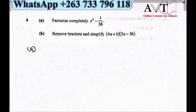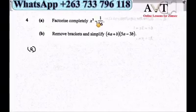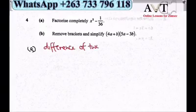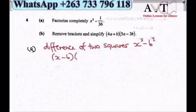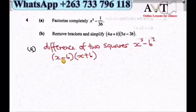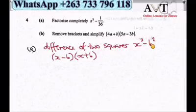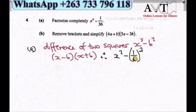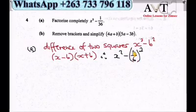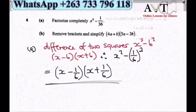Question 4a: Factorise x² minus 1 over 36. This is a difference of two squares: a² − b² = (a − b)(a + b). We express 1/36 as (1/6)², so b = 1/6. The factorised form is (x − 1/6)(x + 1/6), which is our final answer.